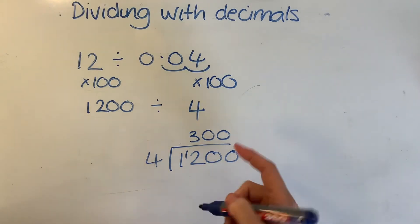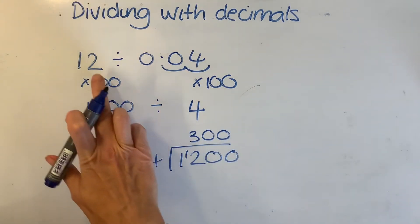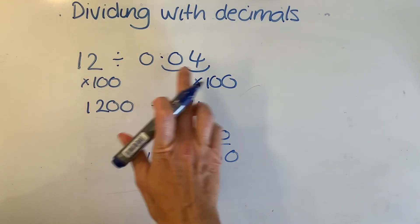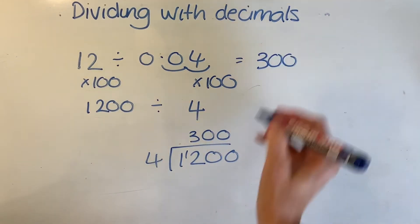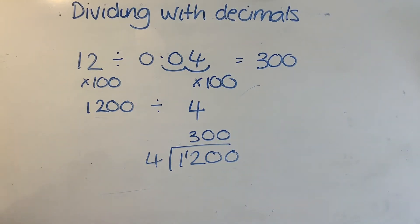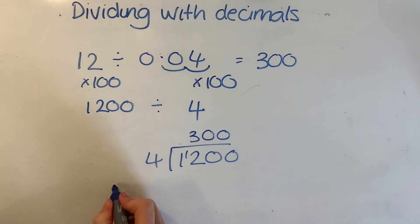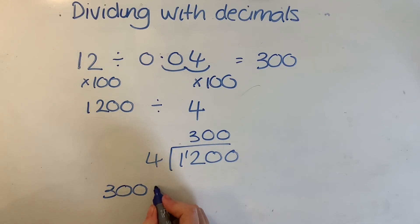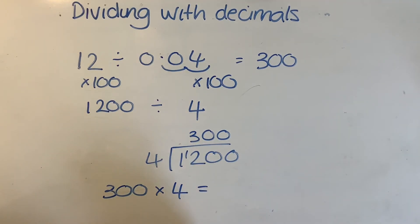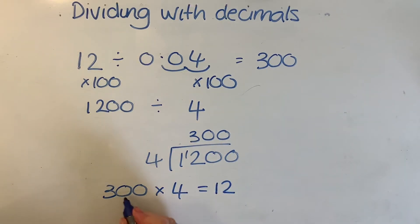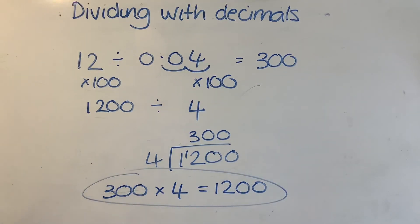My answer would simply be 300. I promise you that the answer to our original sum, 12 divided by 0.04, is 300. Sometimes in the Functional Skills exam they ask you to do a check — you do a reverse. You take your answer, which is 300, multiply it by 4, and work out the answer. I can do 3 times 4 is 12, then just put two zeros on the end — and that's your check. Good luck with all of your work folks, I'll see you again in another video.